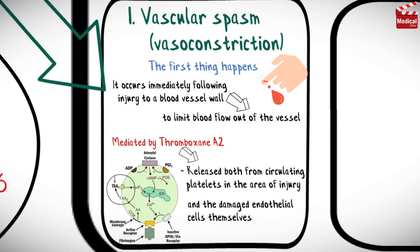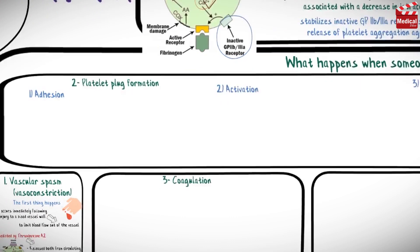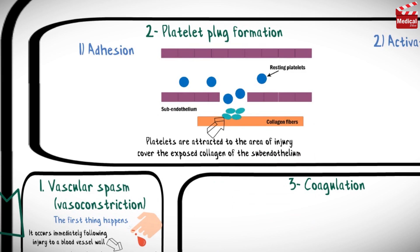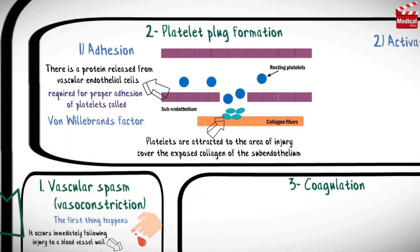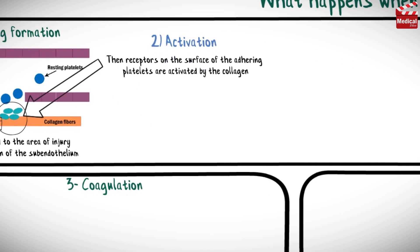Then platelet plug formation occurs in three steps: adhesion, activation, then aggregation. Platelets are attracted to the area of injury and cover the exposed collagen of the subendothelium — this process is called adhesion. There is a protein released from endothelial cells required for proper adhesion of platelets called von Willebrand's factor. This protein is essential for allowing platelets to adhere to collagen as well as to one another.